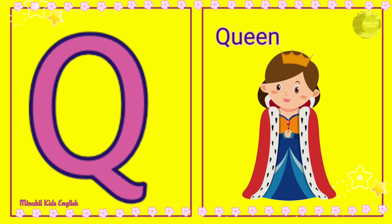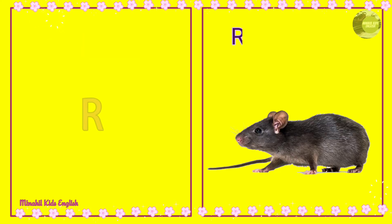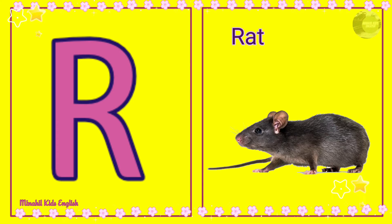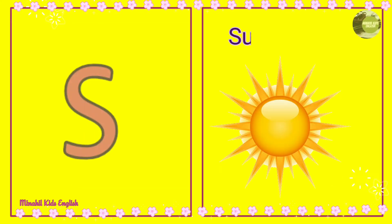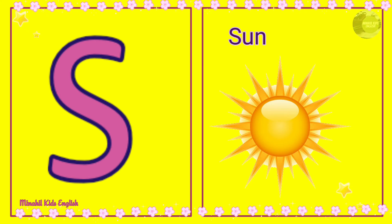Q is for Queen. Queen. R is for Red. Red. S is for Sun. Sun.